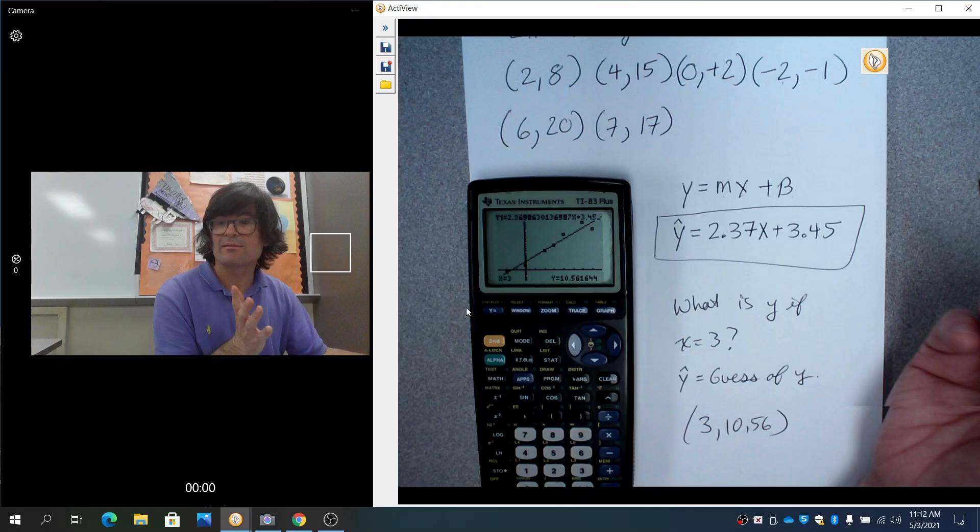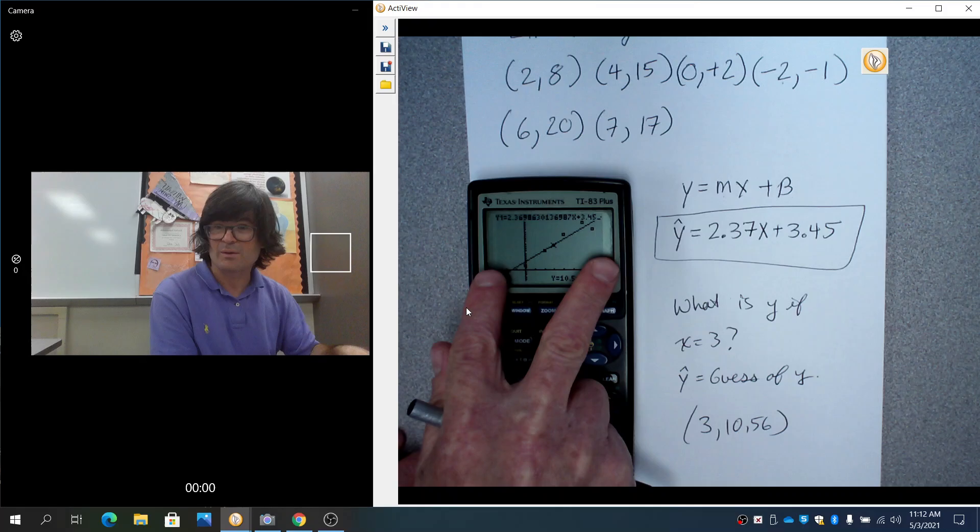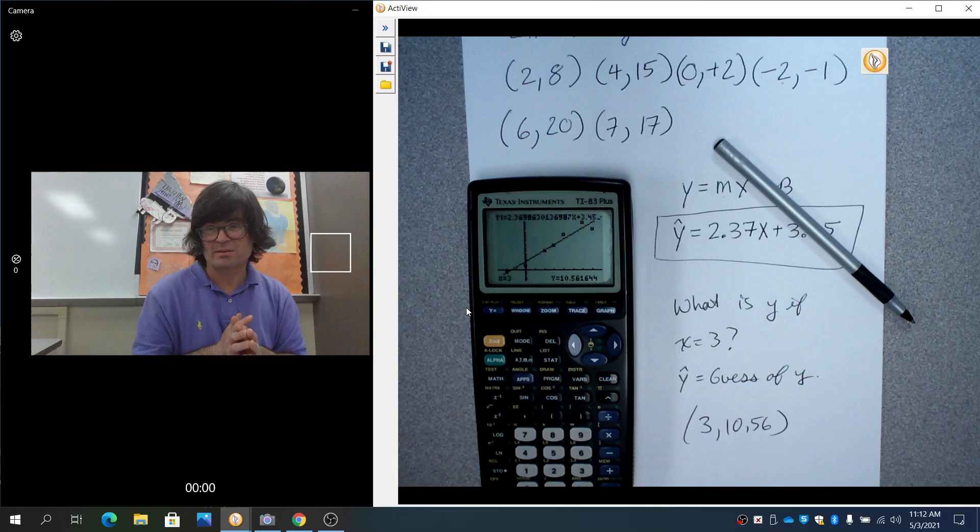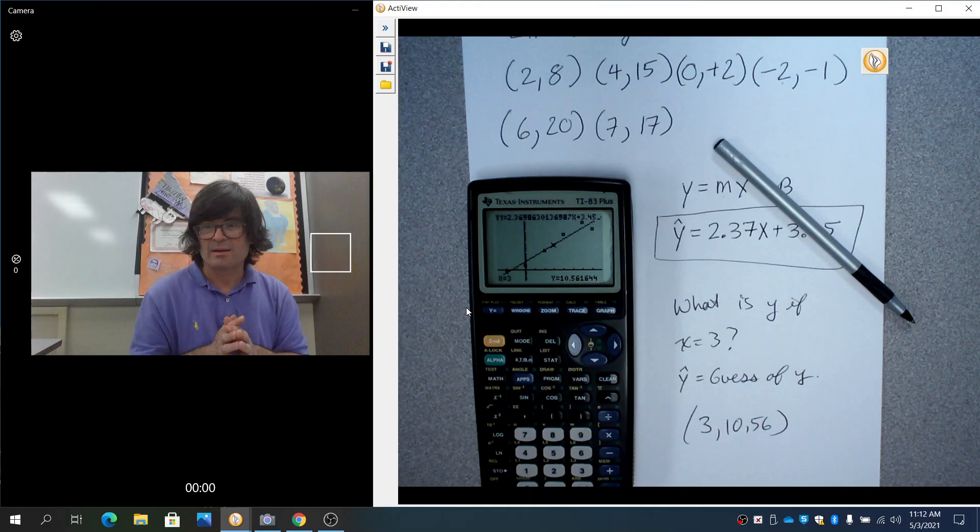If I wanted to guess what y is when x was, say, 68, you could not use this model for that because that is out of the scope of our data. Things may be different when x is 68 than it is here from -2 to 7. So think about the window of where your data is, and that is the only span when you can use a linear regression model to guess what y is going to be. I hope that helped you and I hope you have a good day. I'll see you later.